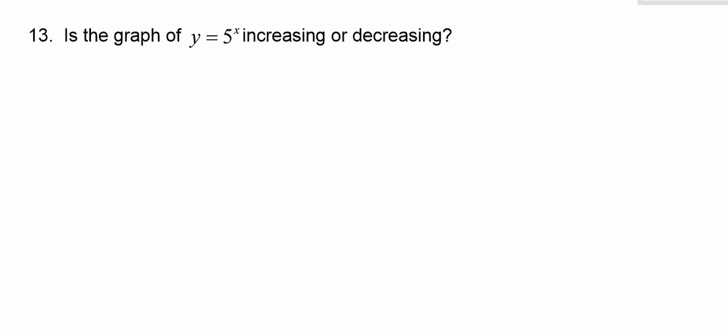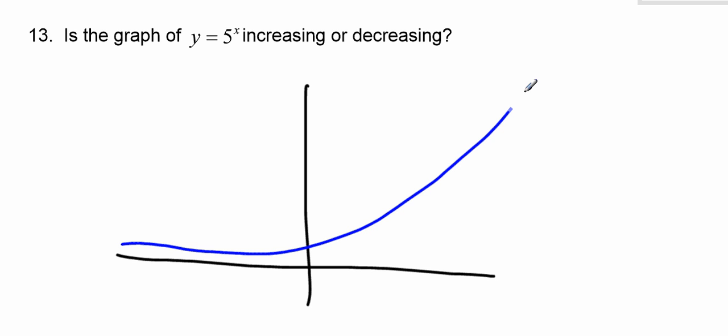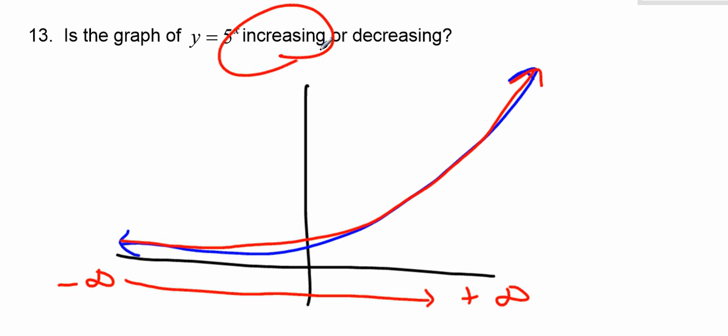Is the graph of y equals 5 to the x increasing or decreasing? Again, think about any exponential function without transformations. They look like this. So on the entire domain. So as you read the graph from negative infinity to positive infinity, that's how you read a graph. This graph clearly is constantly increasing. It's constantly trying to get bigger. So the answer is increasing.